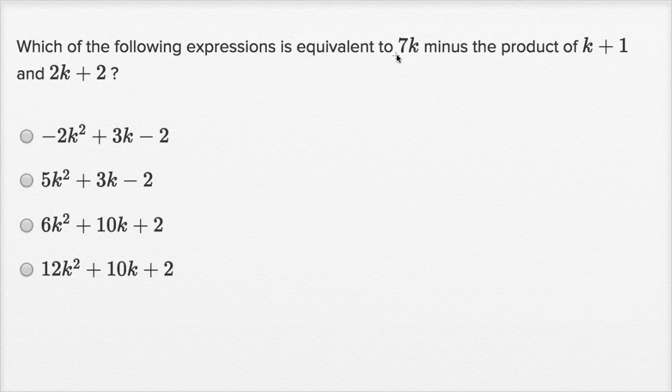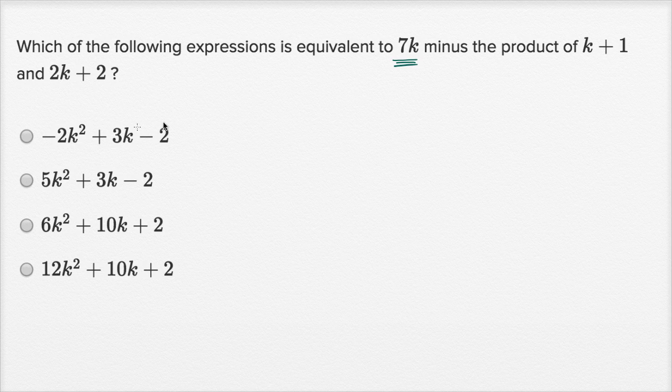Which of the following expressions is equivalent to 7k minus the product of k plus one and 2k plus two?